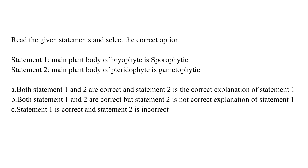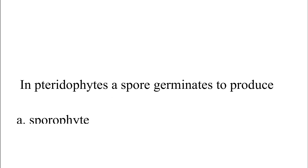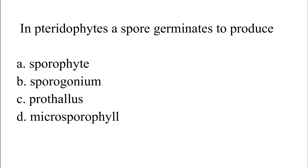Read the given statements and select the correct option. Statement 1: The main plant body of bryophyte is sporophytic. Statement 2: The main plant body of pteridophyte is gametophyte. Option A: Both statements are correct and statement 2 is the correct explanation of statement 1. Option B: Both are correct but statement 2 is not the correct explanation. Option C: Statement 1 is correct, statement 2 is incorrect. Option D: Both are incorrect. The correct answer is Option D — both statements are incorrect.